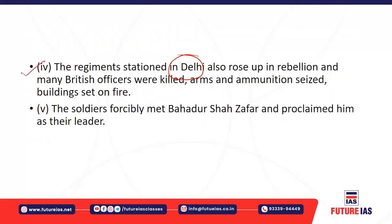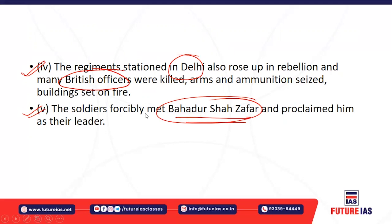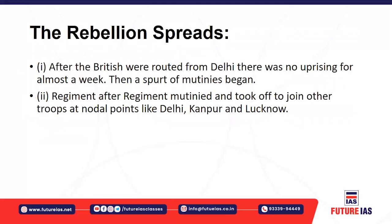Violence erupted and many British officials were killed. Arms and ammunition were seized by the sepoys, and various buildings associated with the British were set on fire. These soldiers then met the last Mughal ruler, Bahadur Shah Zafar, and proclaimed him as their leader. Though Bahadur Shah Zafar was very old, they proclaimed him leader. This rebellion which started from Meerut reached Delhi and spread to different parts of the country.